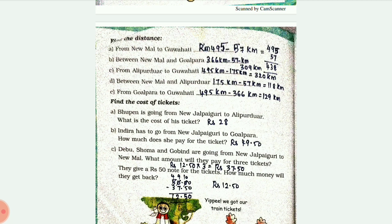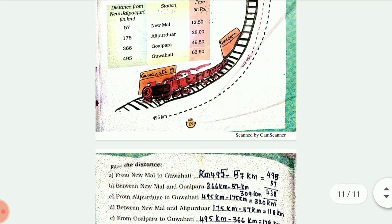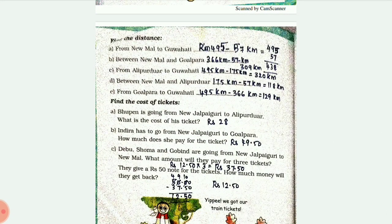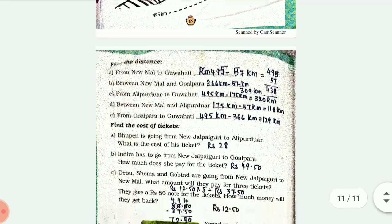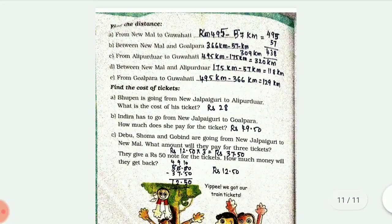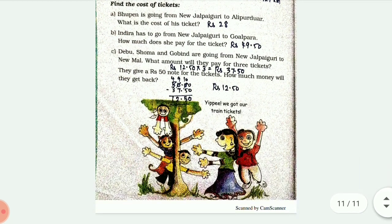Find the cost of tickets. Blue pen is going from New Jalpahaguri to Alipurduar - the cost of his ticket is 28 rupees. For the second one it is 49.50. Debu, Shoma, and Gobind are going from New Jalpahaguri to New Mall - each ticket costs 12 rupees, so 12.55 into 3 is 37.50. They gave a 50 rupee note, so 50 minus 37.50 is 12.50 change.